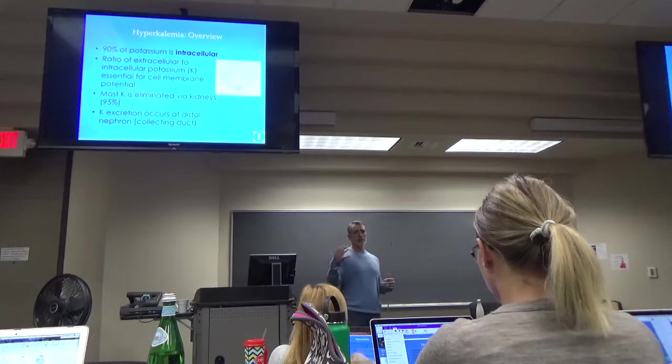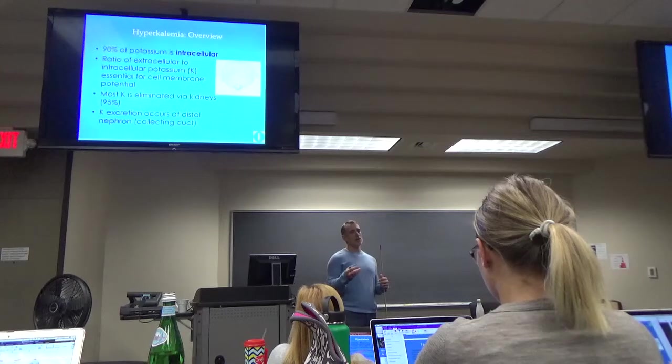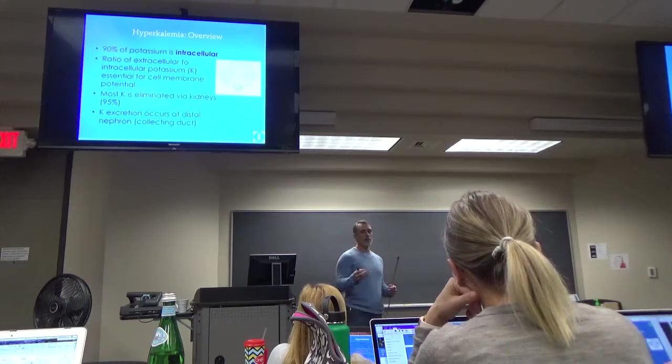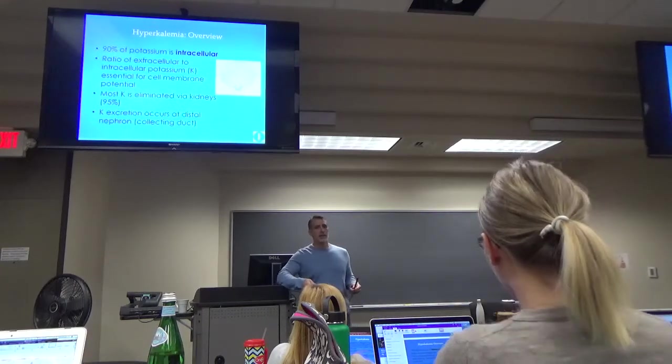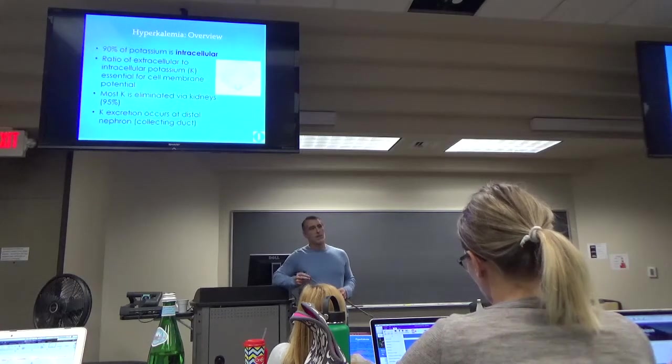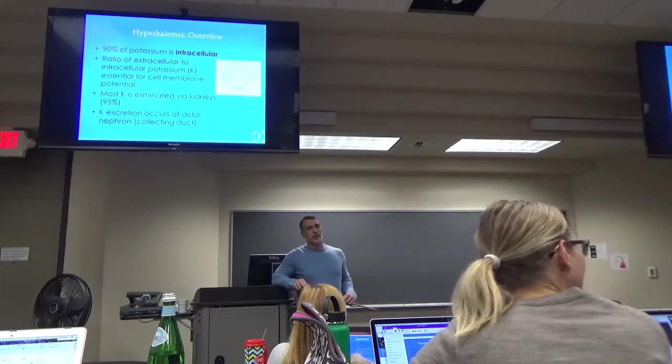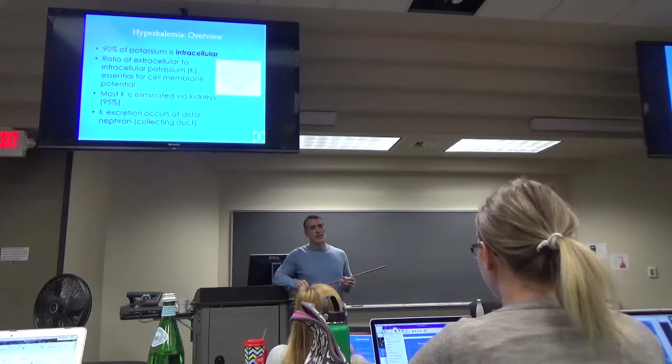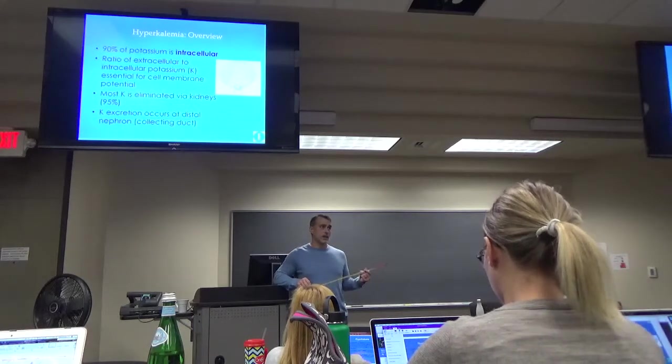So potassium should be inside the cells. Normally potassium is in your cell, 90% of it in fact. That ratio is what helps your cells do what your cells do. When that gets messed up, they have problems doing what they do, i.e. Macalester. So also 95% of it is excreted through the kidneys. So remember I said when you think potassium, think about the kidneys. Most of this is going to happen at the distal nephron and the collecting duct.